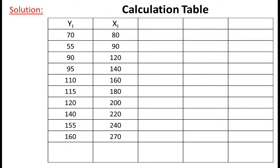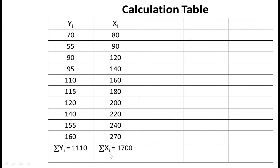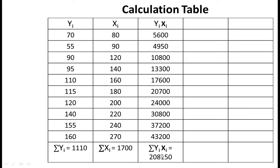Solution. In the calculation table, these are the values of y and these are the values of x. Summation of yi is 1110 and summation of xi is 1700.